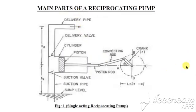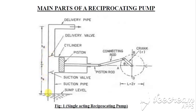The main parts of a reciprocating pump, as you can see in the diagram, include a cylinder in which the piston is reciprocating — that is the direct mechanical displacer. We also have a suction pipe fitted with a suction valve and a delivery pipe fitted with a delivery valve. Both of these are mechanical valves; they are unidirectional, meaning they allow liquid flow only in one direction.